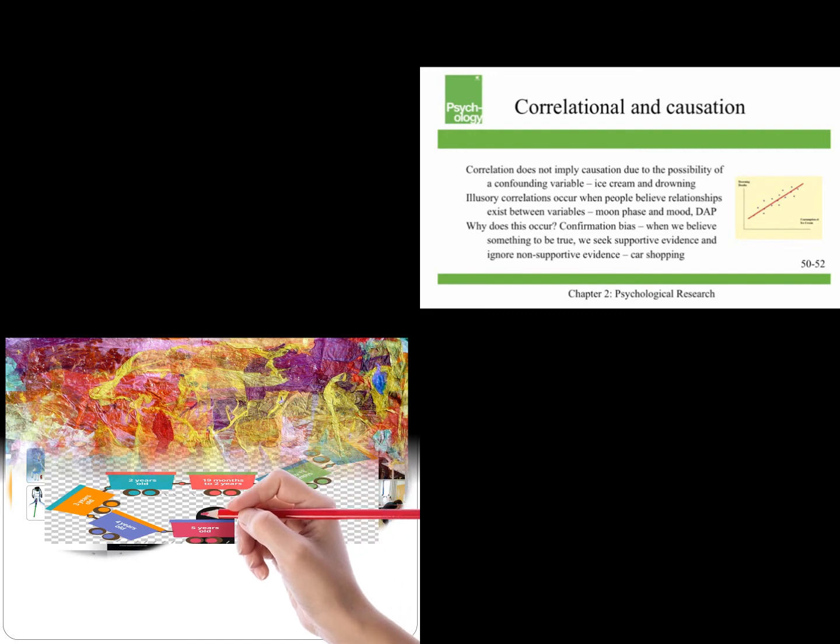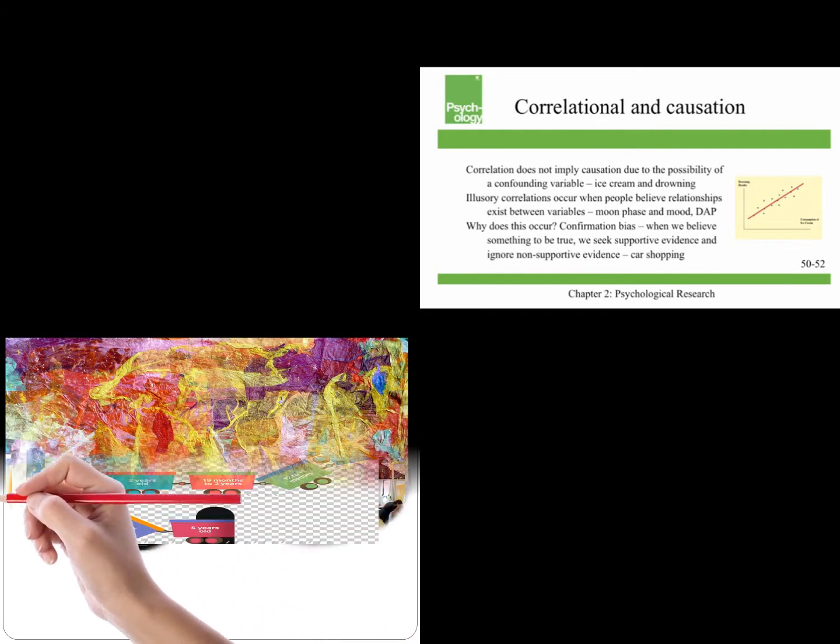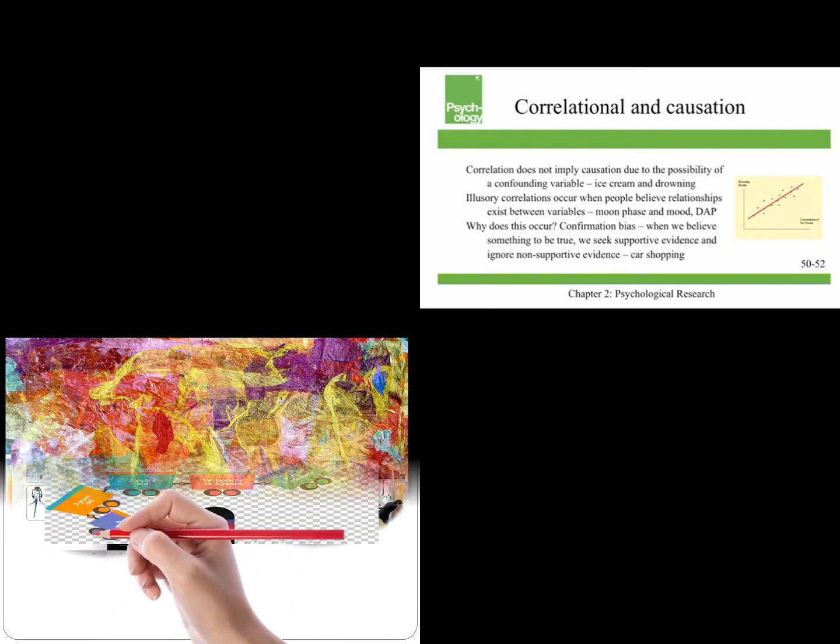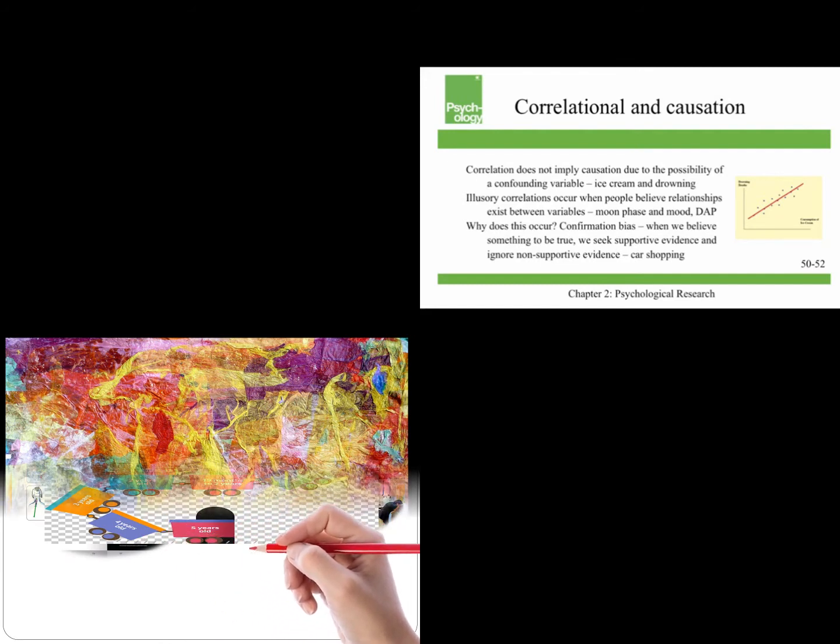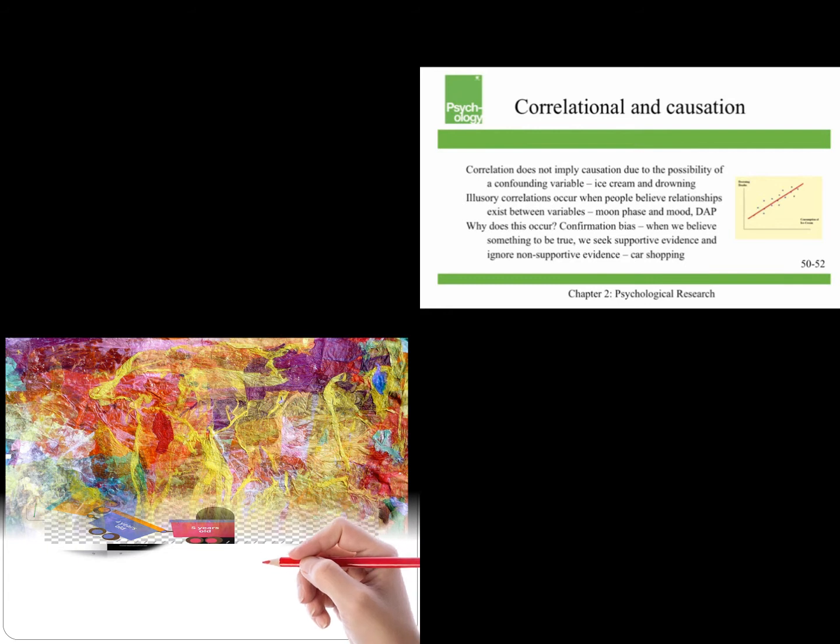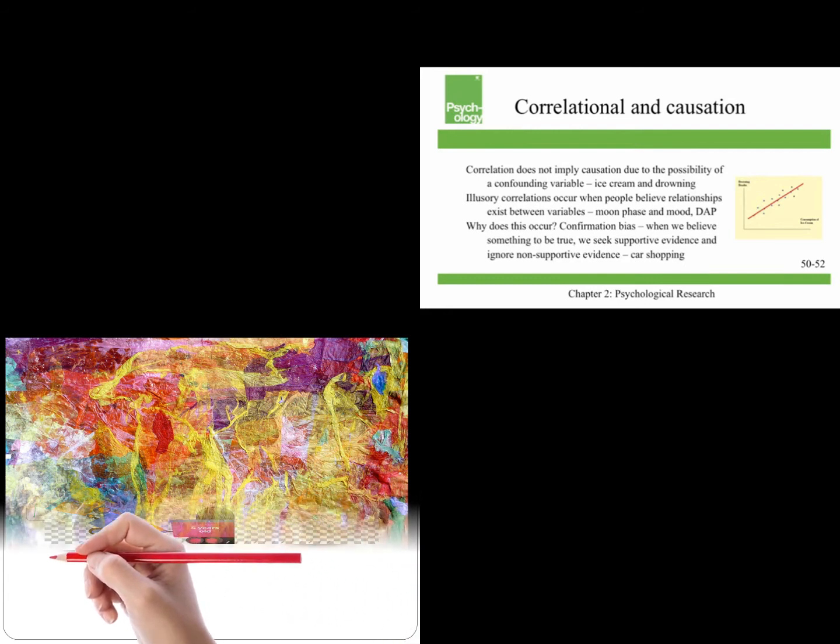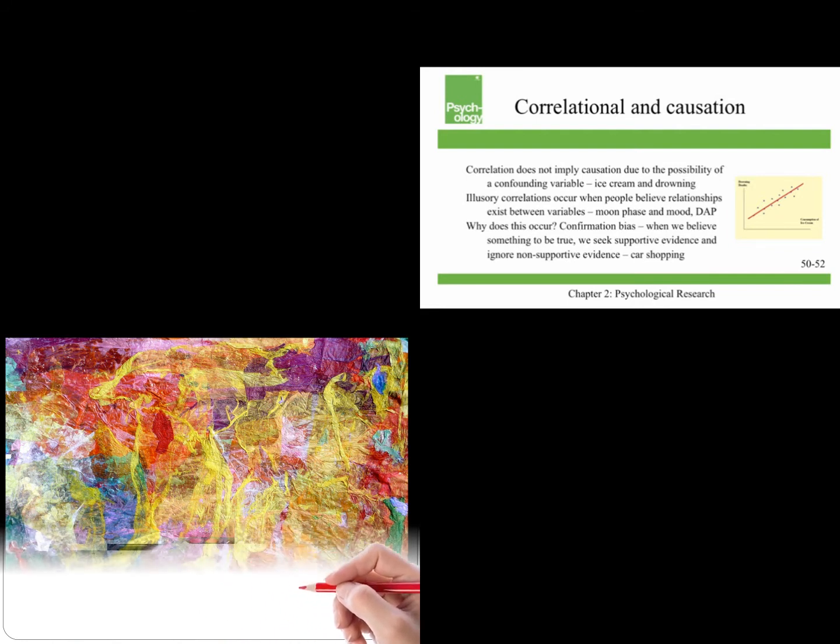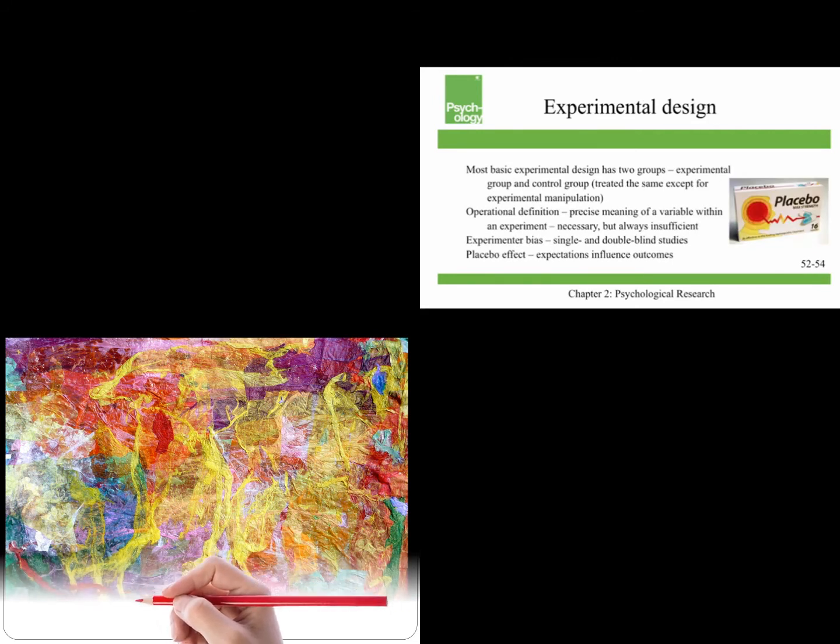So why does this occur? Well, one answer is confirmation bias. This is when we believe something to be true, we seek supportive evidence and ignore non-supportive evidence. For example, research shows that in automotive shopping, people do research after they buy a car to confirm that they made a good choice when obviously you should do the research before you go shopping.